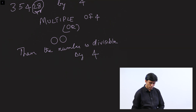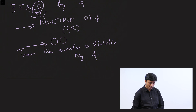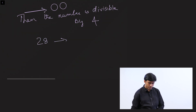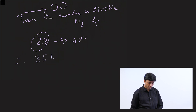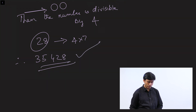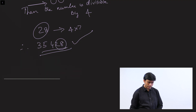then the number is divisible by 4. You need to look at the last two digits and see if it's a multiple of 4 or if the last two digits are double zeros. So for this number, the last two digits are 28. Since 28 is 4 into 7, 28 is divisible by 4. Therefore, 35,428 is divisible by 4. Remember: take the last two digits and see if it is divisible by 4 or if it is a multiple of 4.